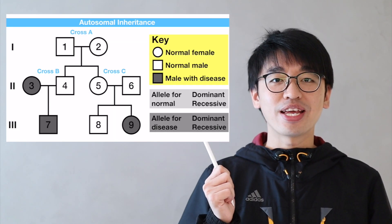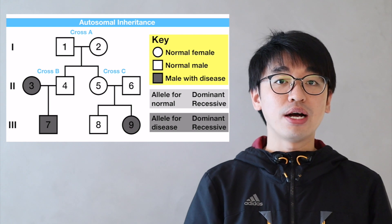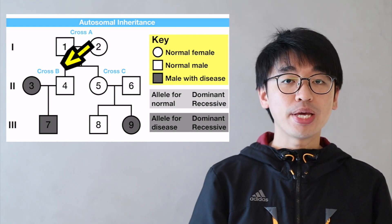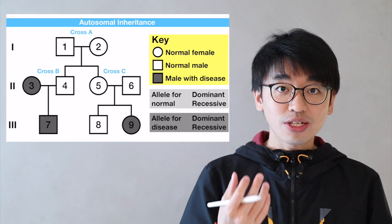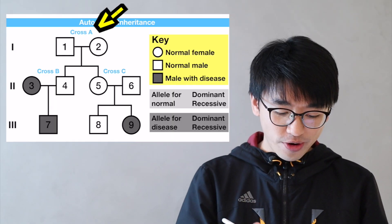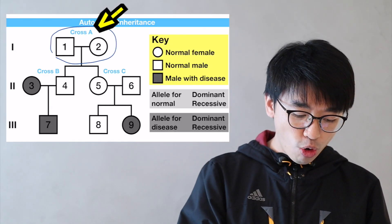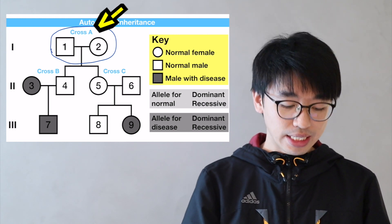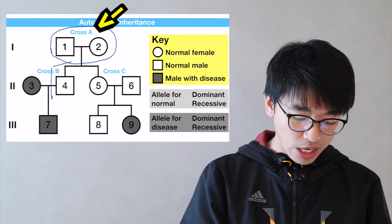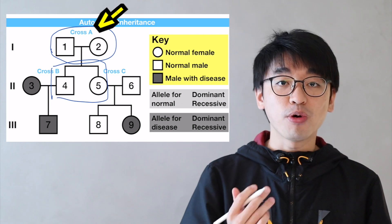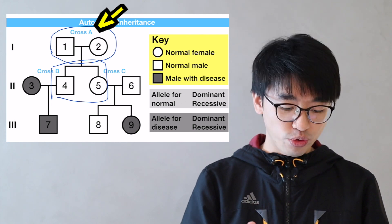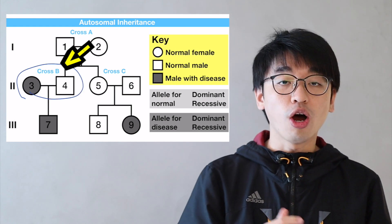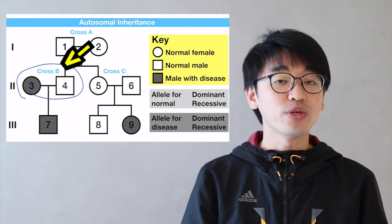In this pedigree, which cross can be used to find out which allele is dominant or recessive — is it cross A, B, or C? In cross A, both parents have the same phenotype, but none of their offspring have the opposite phenotype, so we cannot use cross A. For cross B, the parents do not have the same phenotype, so we cannot use it either.